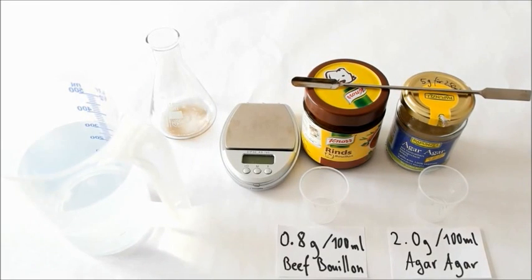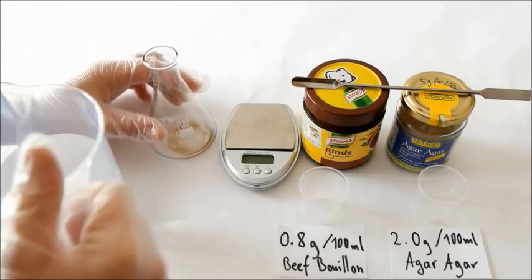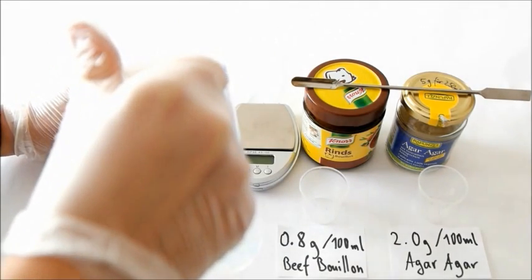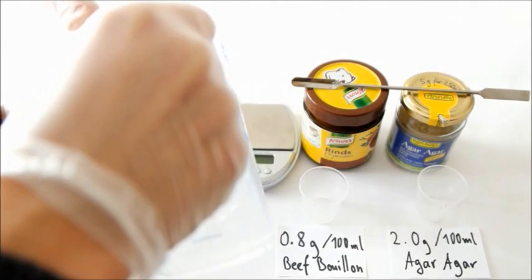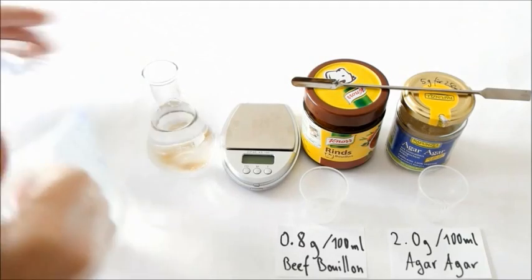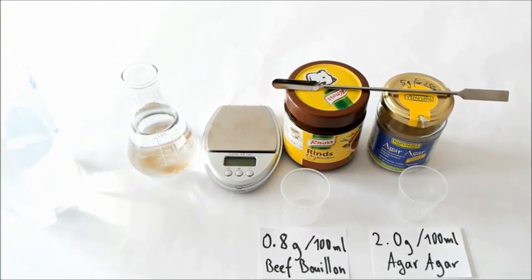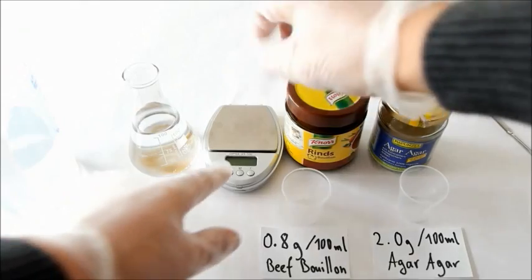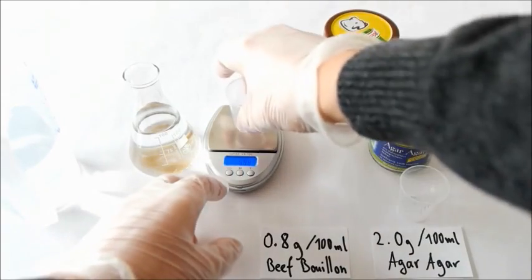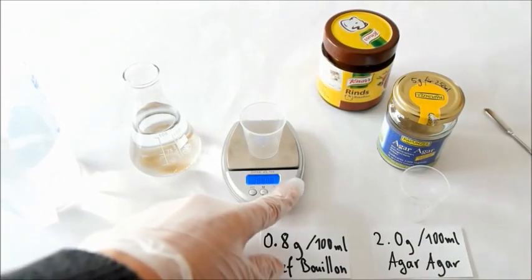First of all put 100 ml of tap water in your Erlenmeyer flask and then measure out your ingredients. You'll need around 0.8 grams of the beef bouillon in 100 ml of water.